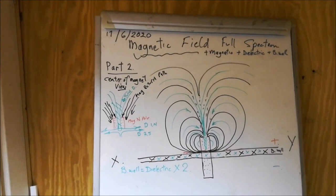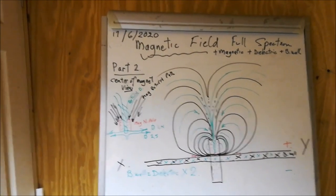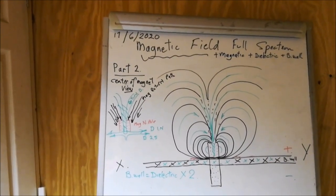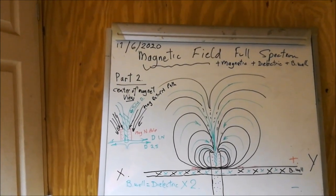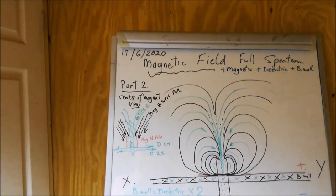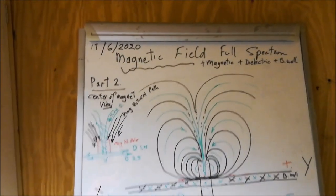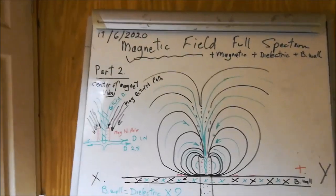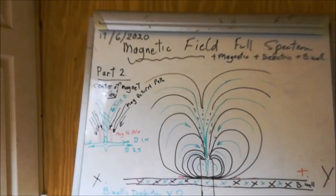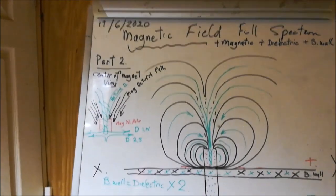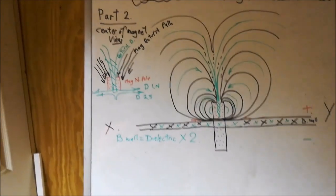Good morning everybody, DC here. It's the 17th of the 6th 2020, and this is part two of the magnetic field full spectrum. This includes the magnetic plus the dielectric in relation to the Bloch wall or block wall. We've got the diagram here today.